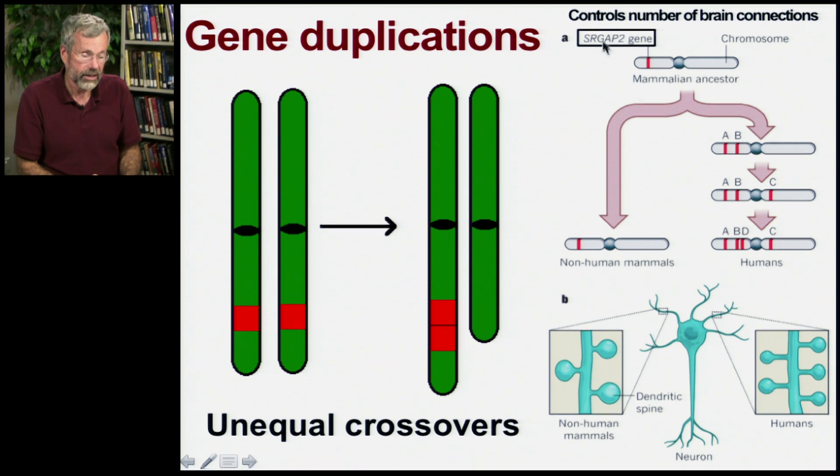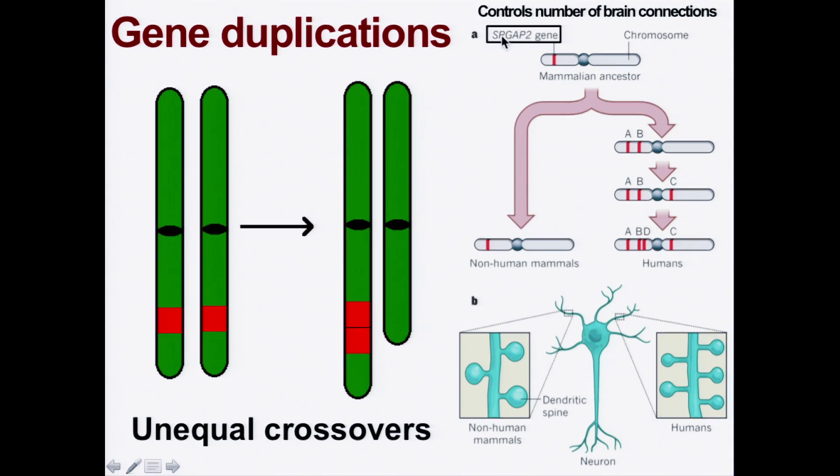So, for example, here is an extraordinary gene called SRGAP2, exciting name, which is on a mammalian chromosome. And in non-human mammals, there's just one copy.